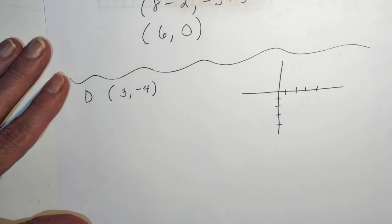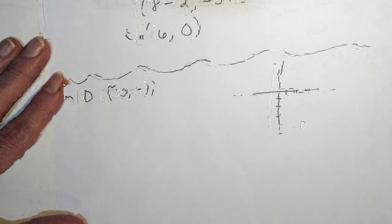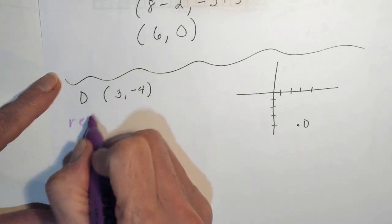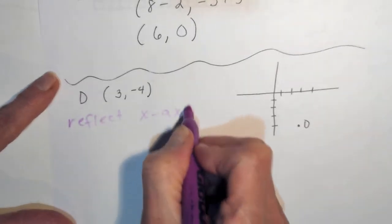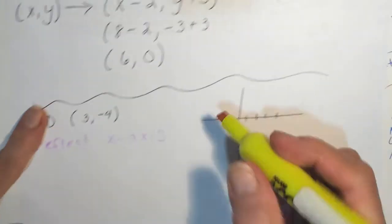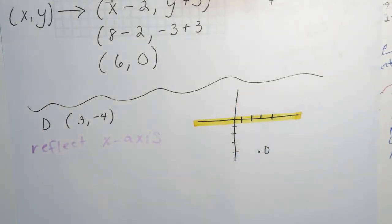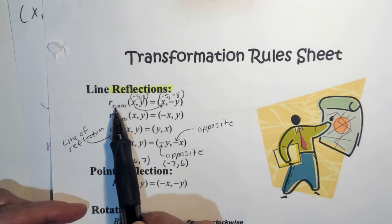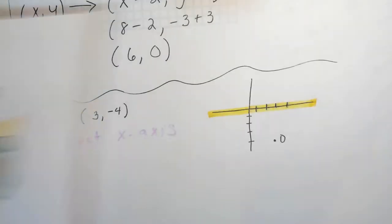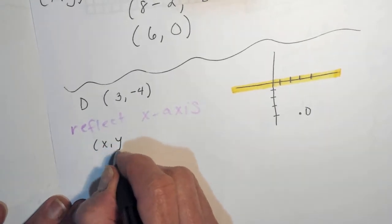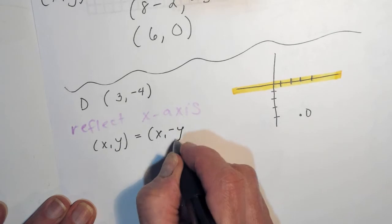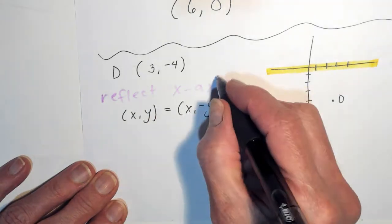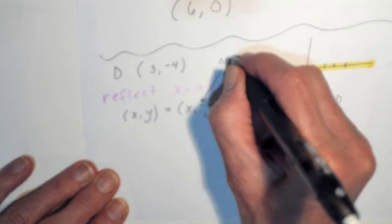First thing we're going to do is plot point D at 3, negative 4. I would like to reflect it over the x-axis. That's called our line of reflection, and I always like to highlight that with yellow. If you are a formula person, you're going to look at your formulas — over the x-axis it says x, y becomes x, negative y. That means you're going to take the opposite of your y value.